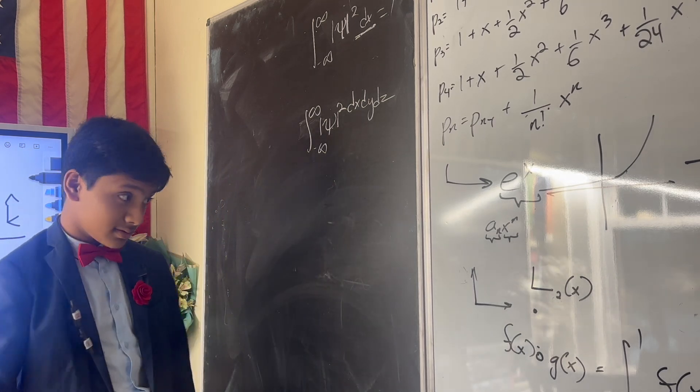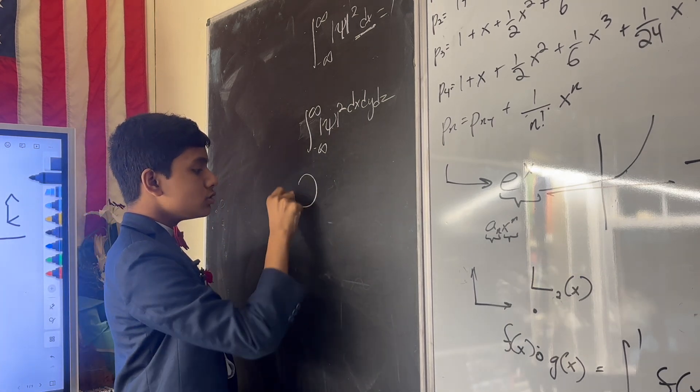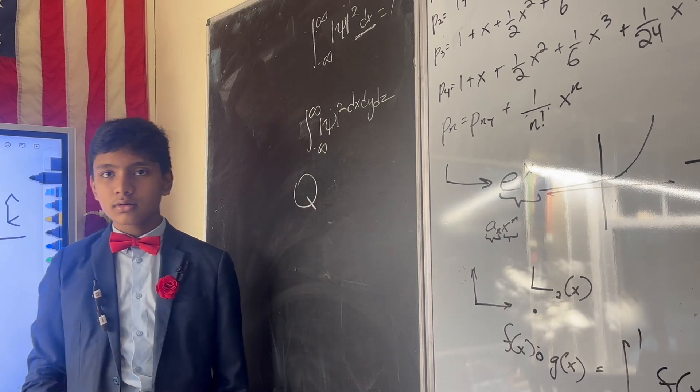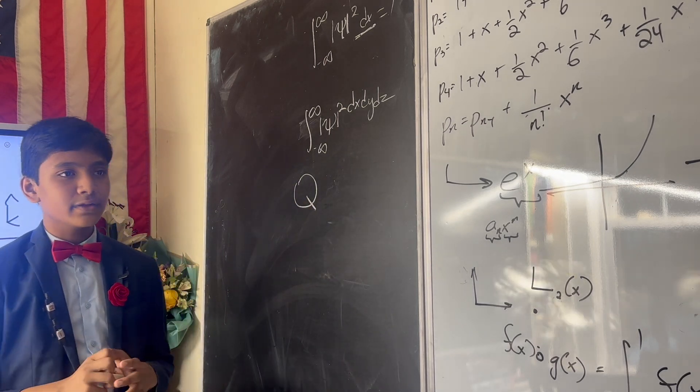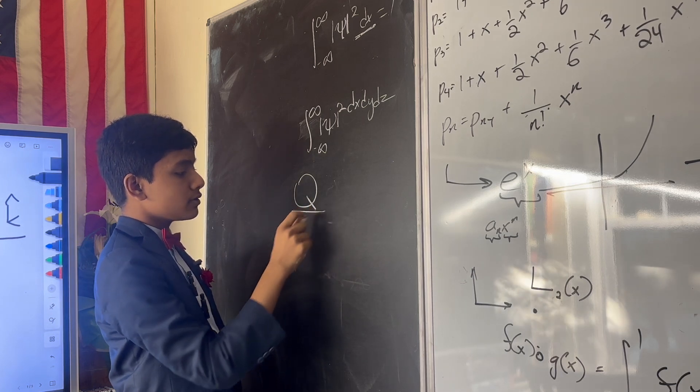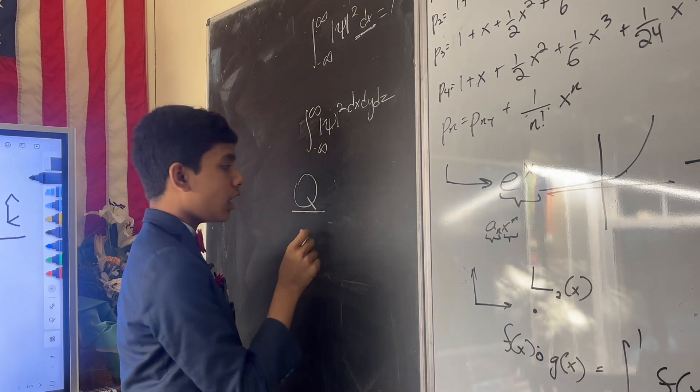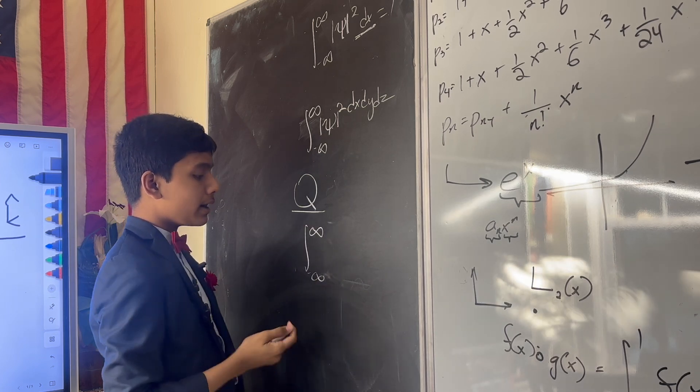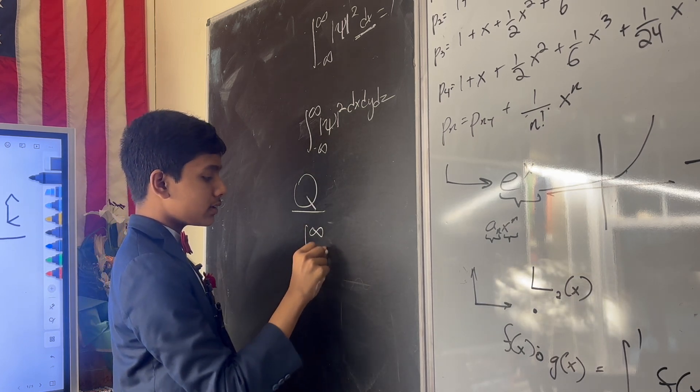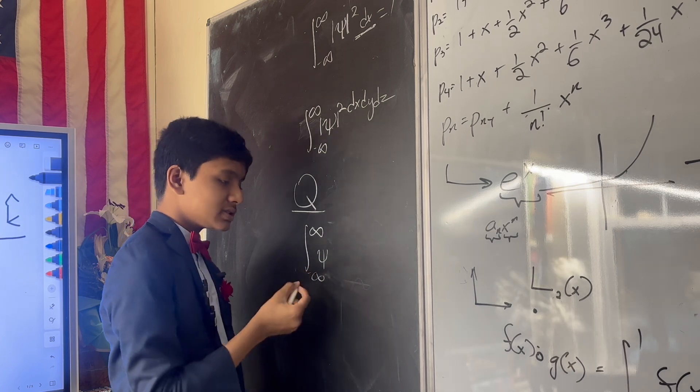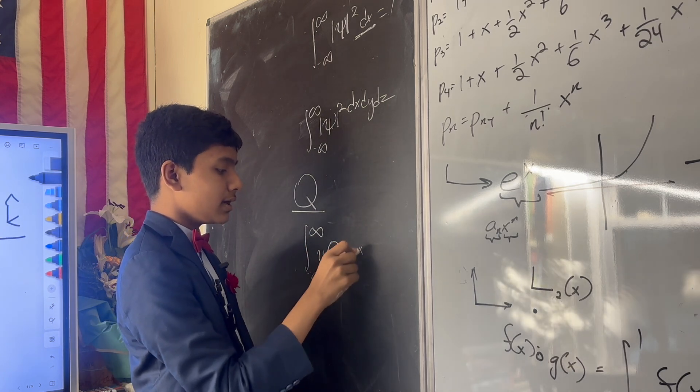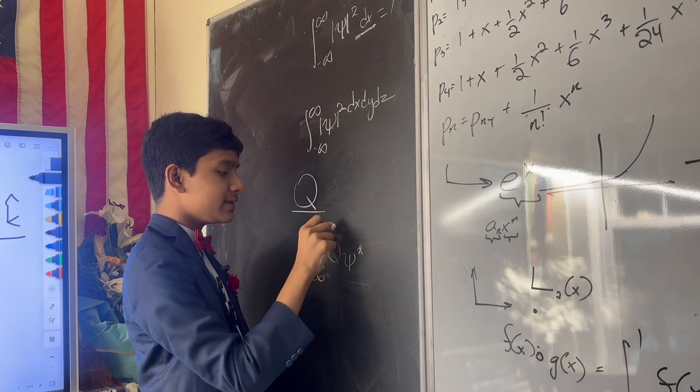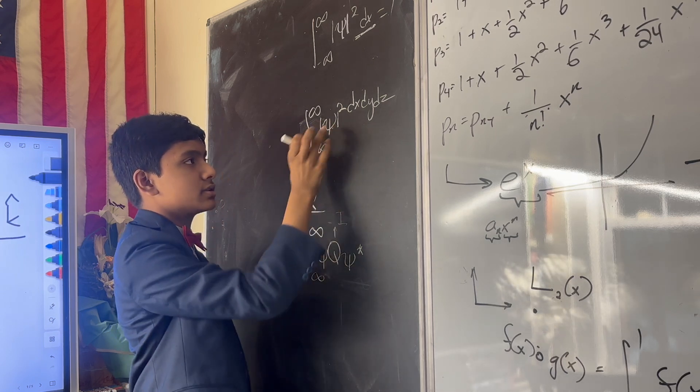But, you can also now define the expectation value of a linear operator, like let's call this operator Q for quantum mechanics, by taking the integral over the real line of psi Q psi conjugate. And notice that if Q is the identity, then this just reduces to 1.